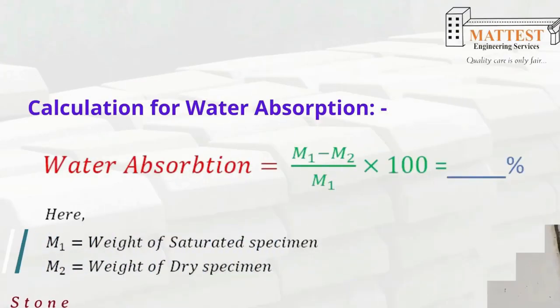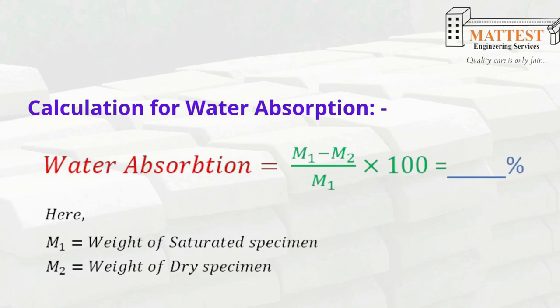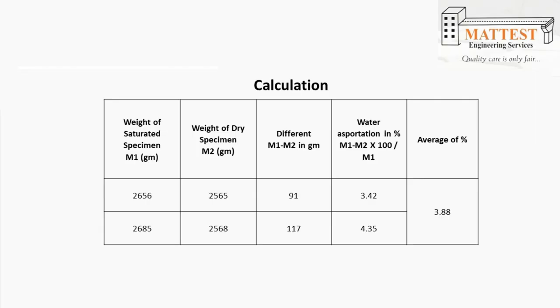Now calculate the percentage of water absorption of curbstone. The percentage of water absorption equals mass of saturated specimen minus mass of dry specimen, divided by mass of dry specimen, multiplied by 100. The answer will be in percentage. The water absorption, being the average, shall not be more than 6% by mass.